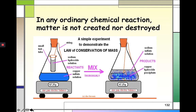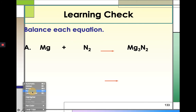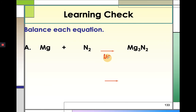Matter is not created nor destroyed. So let us now practice balancing chemical equations. For example, magnesium reacting with nitrogen gas to form magnesium nitride. One helpful tool is to list down the elements that are involved. We usually list all elements at the center or below the arrow of the equation.